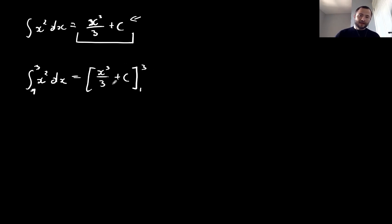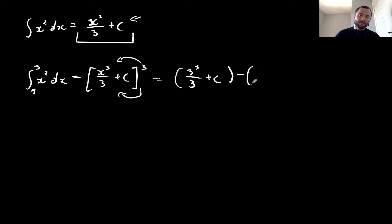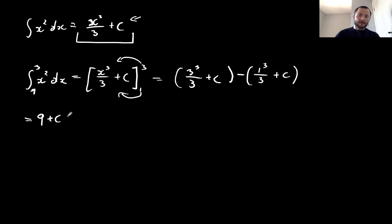To find the value of the integral between those boundaries, I insert the upper bound into the expression and subtract the result with the lower bound. That gives: (3³/3 + c) minus (1³/3 + c). Expanding: 27 over 3 is 9, plus c, minus 1 over 3, minus c. The constants of integration cancel out.